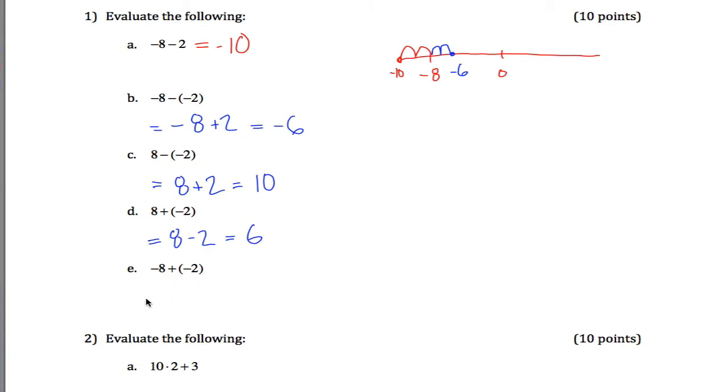Finally, negative 8 plus negative 2. I believe we've done this one already. The trick here is recognizing that again when you're adding a negative, what you're doing is subtracting. Negative 8 minus 2, I've seen that already, that's negative 10 from part A. So those are your answers.